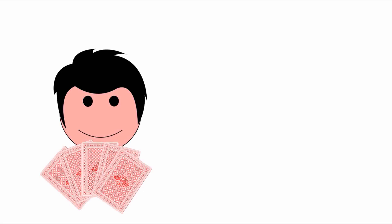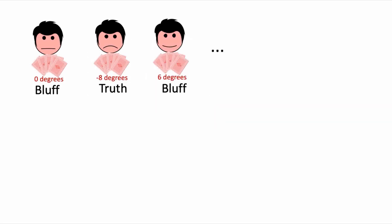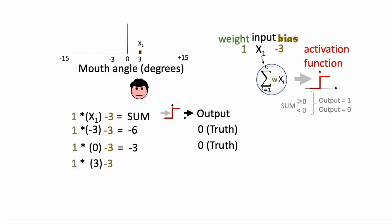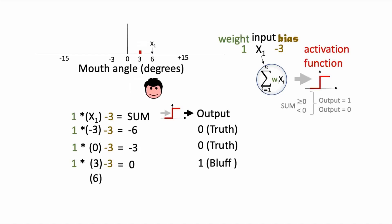We went through an example where we used a single neuron model to help us predict whether our friend was bluffing at poker based on his mouth angle. Here we had one-dimensional input consisting of the mouth angle. We collected labeled data consisting of our friend's mouth angle and whether or not he was bluffing in rounds of poker, using a 1 to represent bluffing and a 0 to represent truth telling. We showed how a single neuron model can find values of weights and biases so that the weighted sum plus bias passed through the step activation function will output a 1 for mouth angles where our friend is bluffing and output a 0 for mouth angles where our friend is telling the truth.